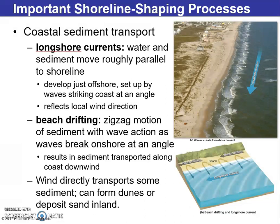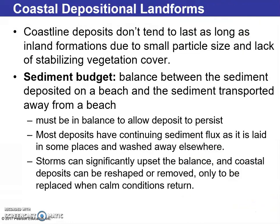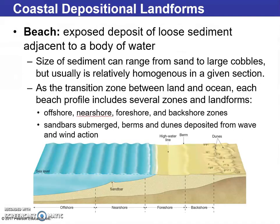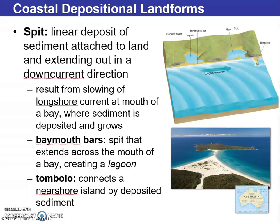Coastal sediment transport involves longshore currents — water and sediment running parallel to the shoreline — and beach drifting, which is the net motion of sediment due to wave action, kind of moving along with the waves. The sediment budget is the balance between sediment deposited on a beach and sediment transported away, a net to-and-from measure. A beach is an exposed deposit of loose sediment adjacent to a water body. A spit is a linear deposit of sediment attached to the land, extending out in a down-current direction, which can close off a bay.